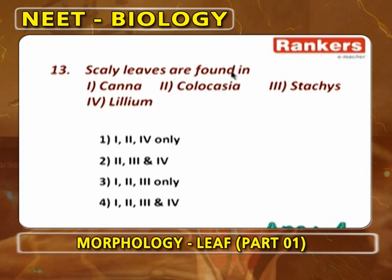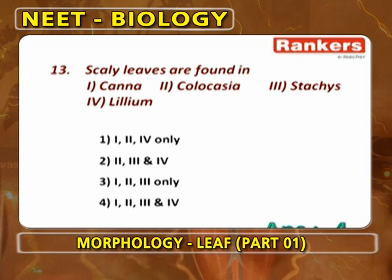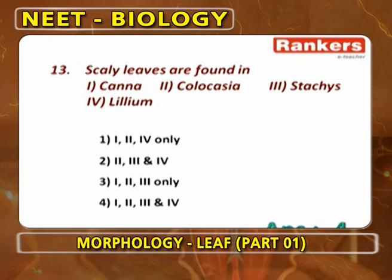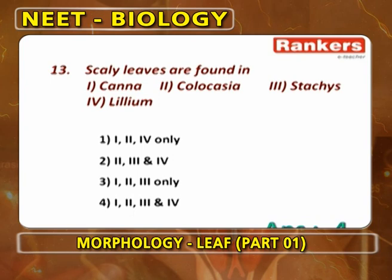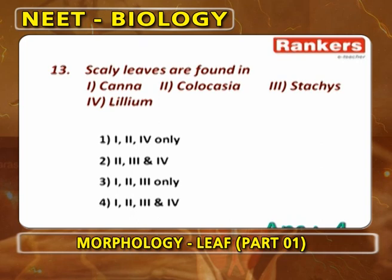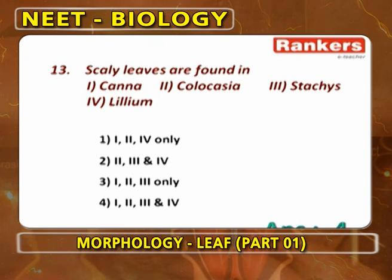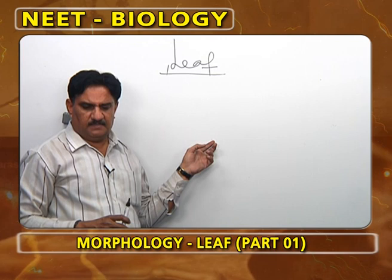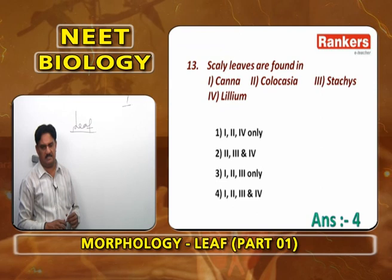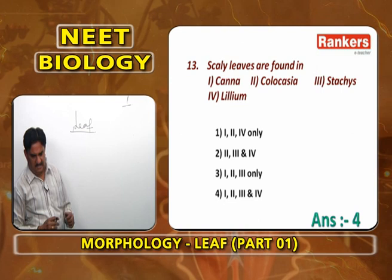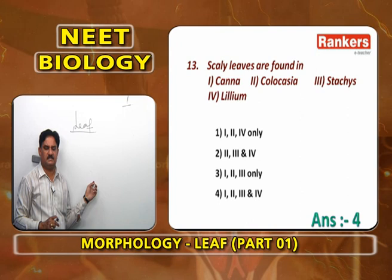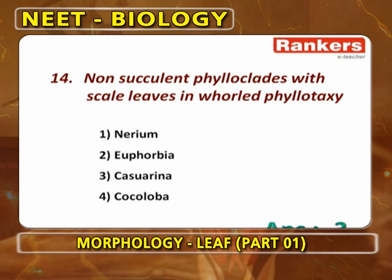Scale leaves are found in Canna indica (rhizome), Colocasia (corm), Stachys tubifera (tuberous stem), and Lilium (bulb). In xerophytic plants, scale leaves reduce transpiration; in underground stem modifications, they protect the apical and axillary buds. Underground stem modifications are identified by the presence of apical bud, axillary bud, nodes, internodes, and scale leaves. So all four options (1, 2, 3, 4) are correct answers.